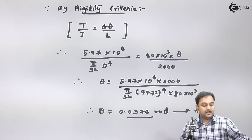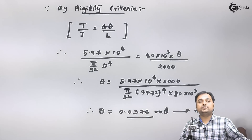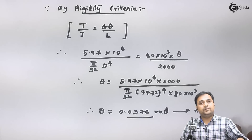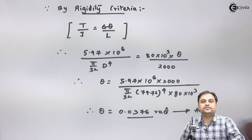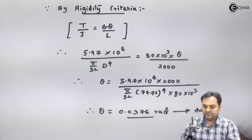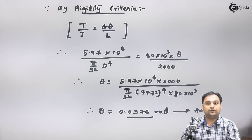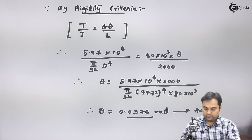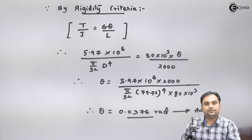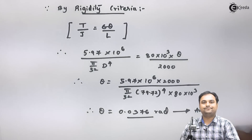So here I have solved this question — we have calculated the diameter of the shaft as 79.72 mm and the angle of twist as 0.0376 radians. With this we complete the problem.